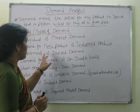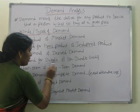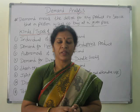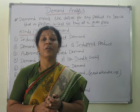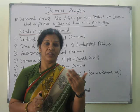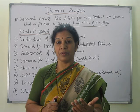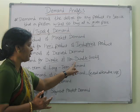The fourth type is demand for durable and non-durable goods. Durable goods include fixed assets like furniture, refrigerators, TVs, buildings, and machinery — these are durable demand. Non-durable demand means perishable goods that we consume daily, like food items, groceries, milk products, vegetables, and fruits. These are perishable, non-durable goods, and we call their demand non-durable demand.